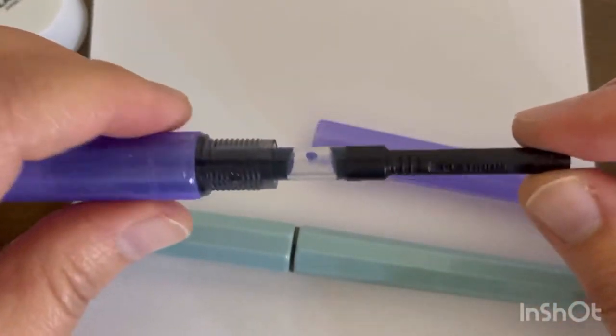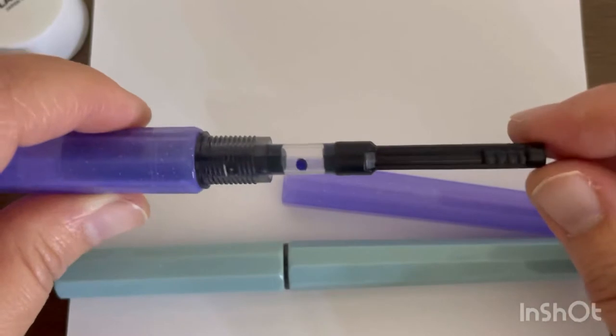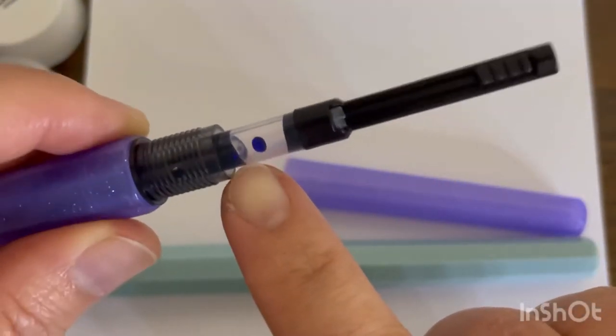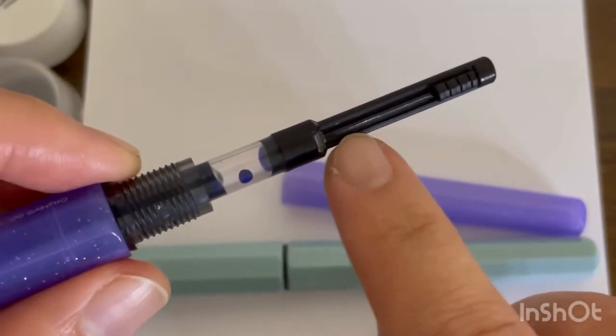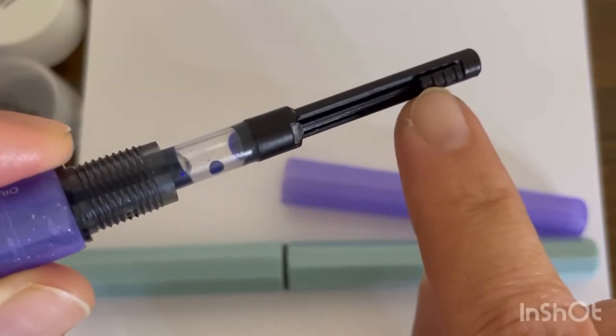One thing I like about this pen is that both of them come with their own little converter, a Platinum converter. It is actually a plunge type. As you can see over here, this portion is one that you slide in here.